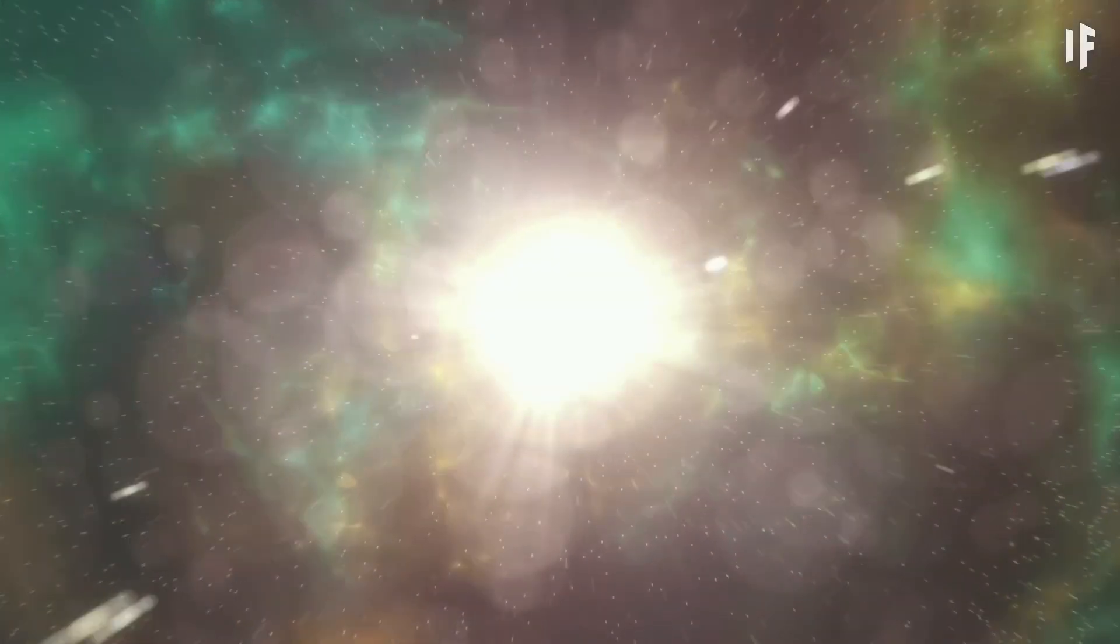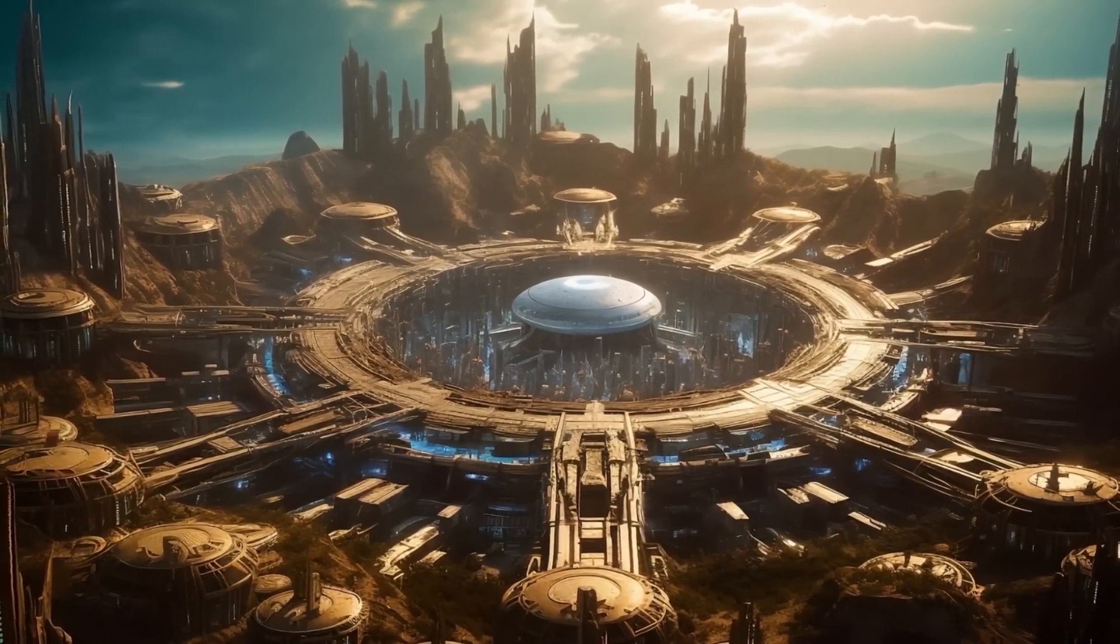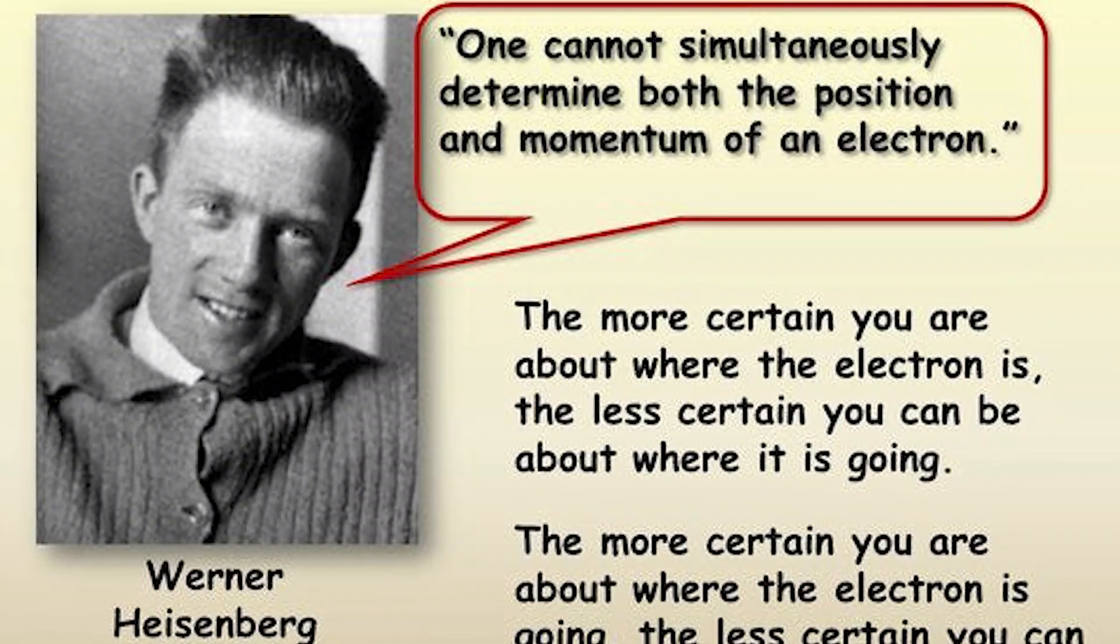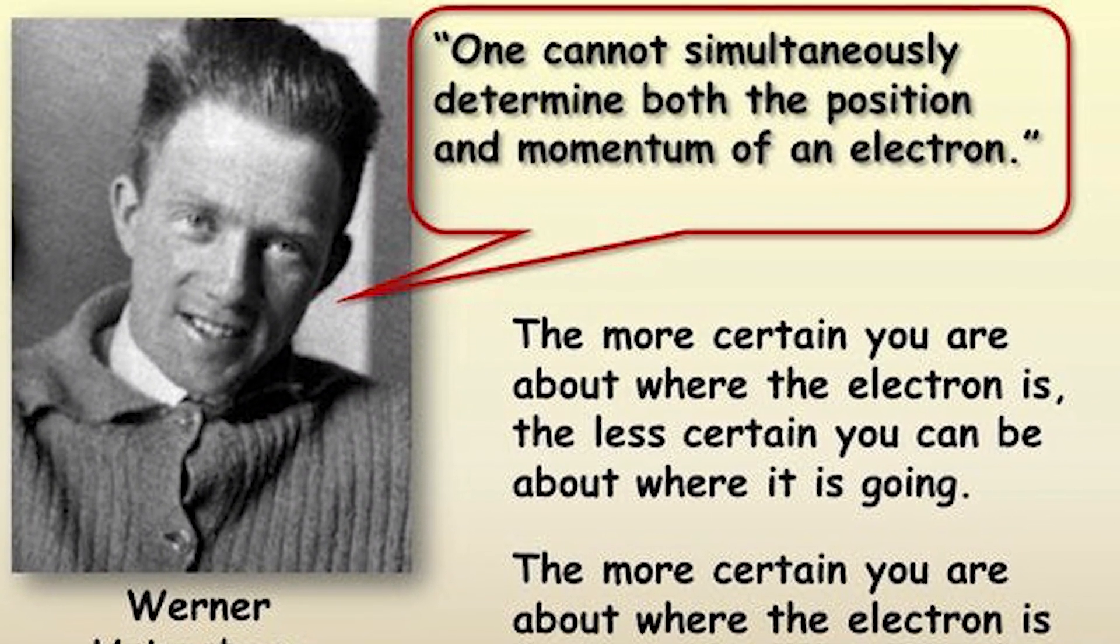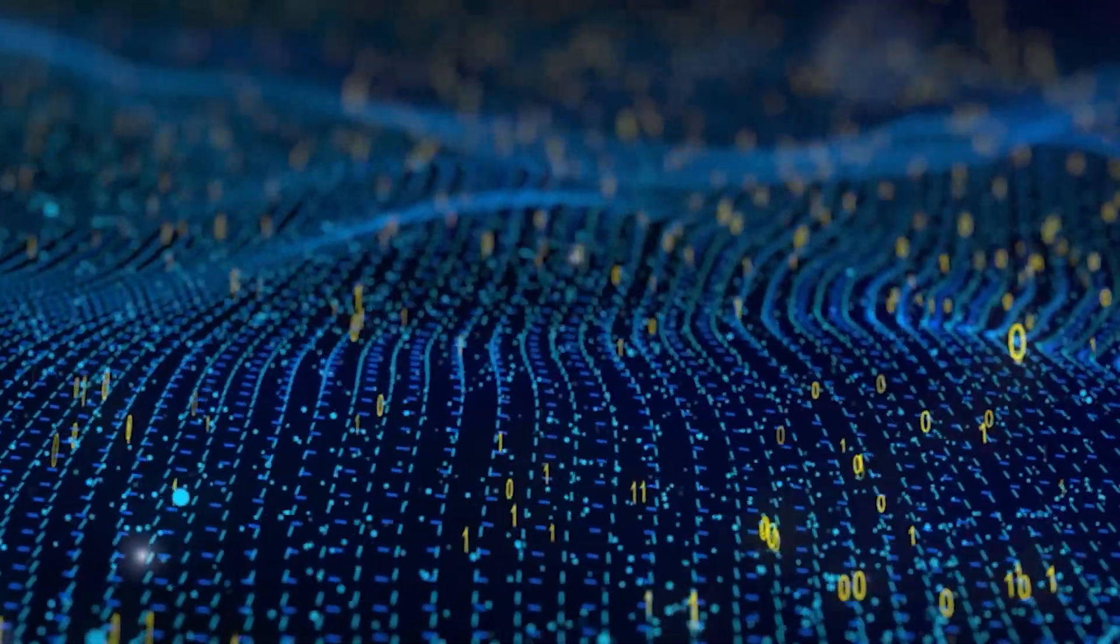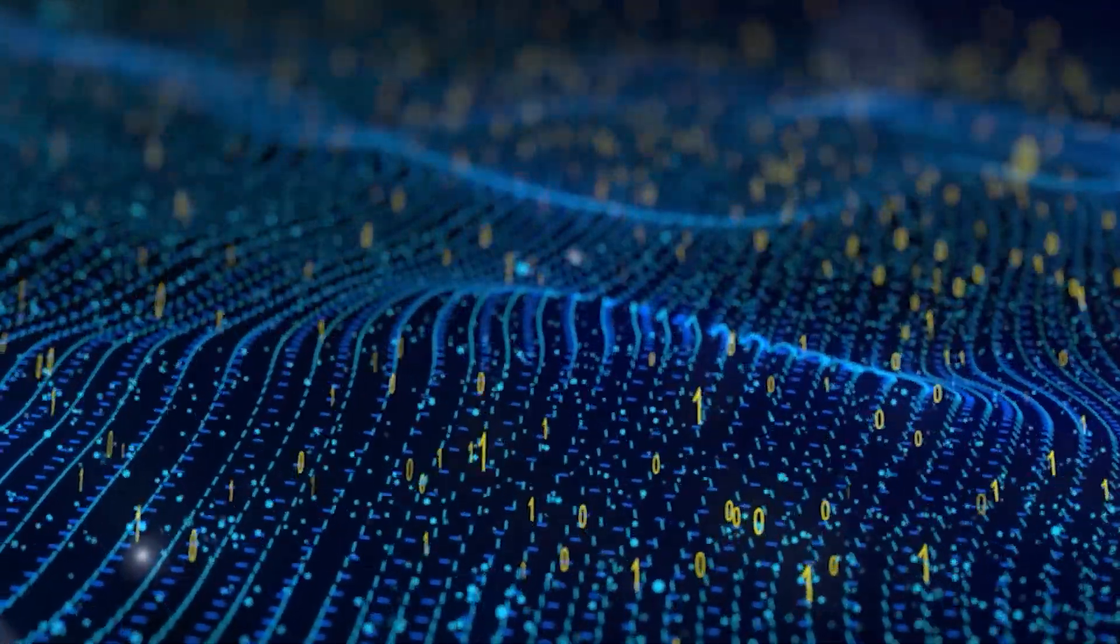However, even the best simulations will always have limitations. For instance, the Heisenberg uncertainty principle in quantum mechanics tells us that we can never know both the position and momentum of a particle with perfect accuracy. This suggests that any simulation would have inherent imperfections, unable to perfectly replicate reality.